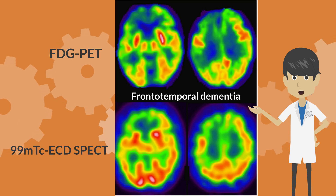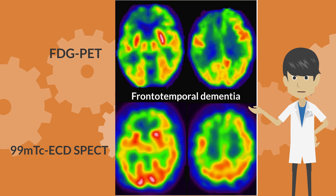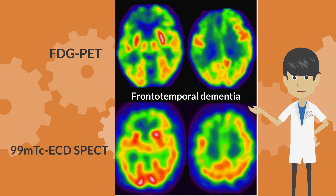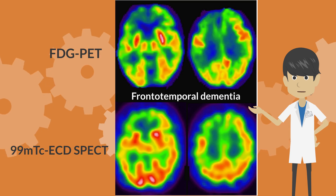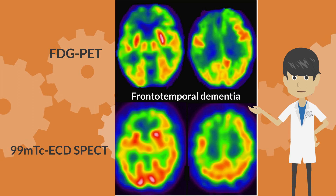As you can see, glucose metabolism PET provides clearer images than brain perfusion SPECT, but similar findings can be obtained with brain perfusion SPECT.